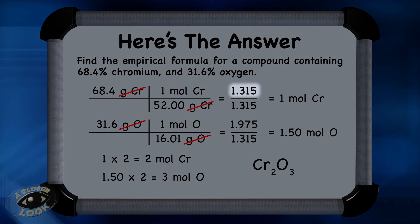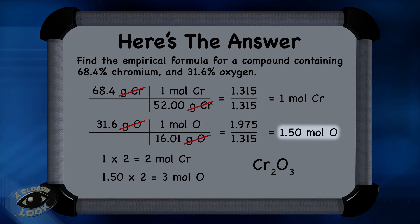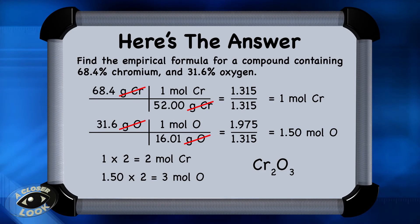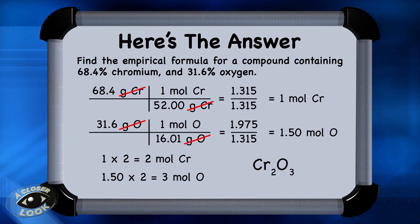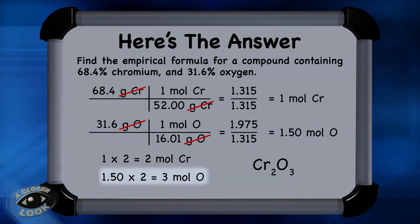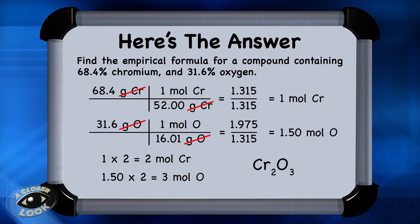Dividing 1.315 by 1.315 gives 1 for chromium. Dividing 1.975 by 1.315 gives 1.50 for oxygen. Since we cannot have a subscript of 1.5 in an empirical formula, we multiply both values by 2: 1 times 2 equals 2 for chromium, and 1.5 times 2 equals 3 for oxygen. Therefore, the empirical formula for the compound is Cr₂O₃.